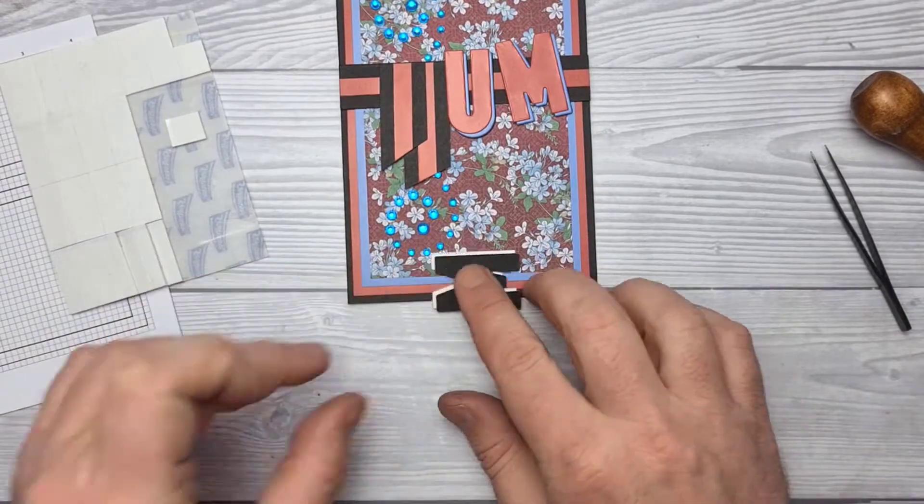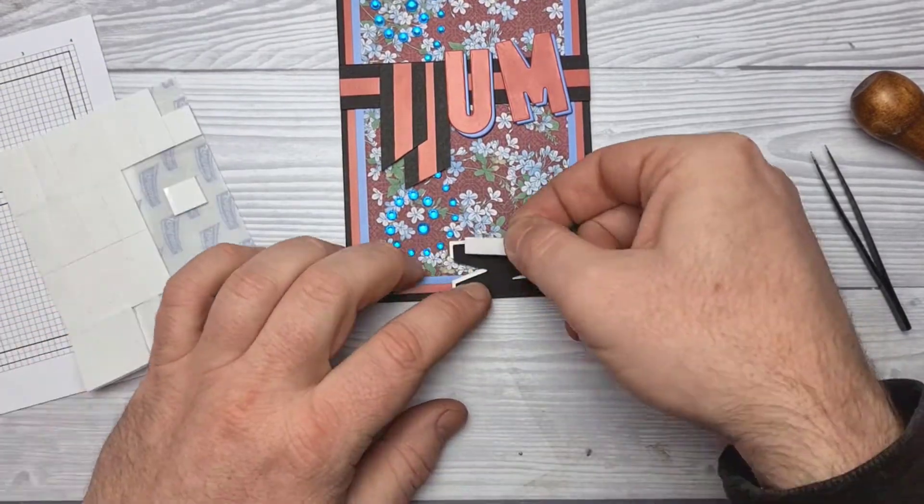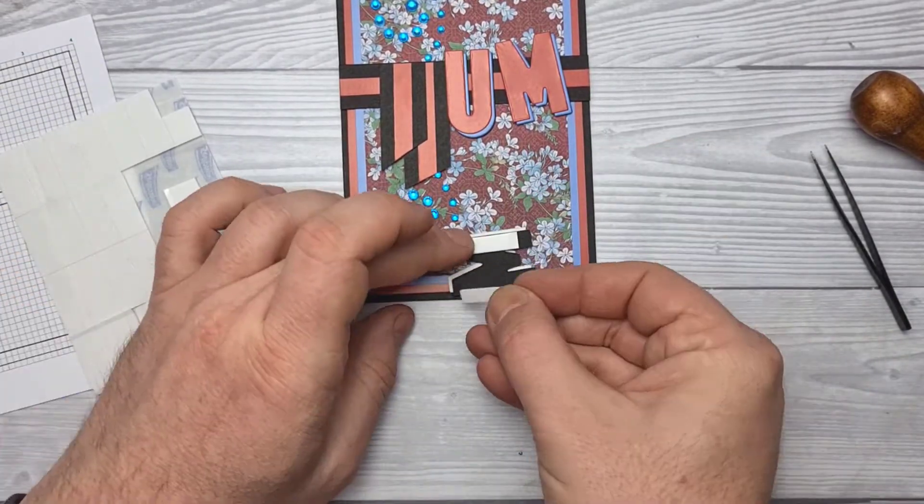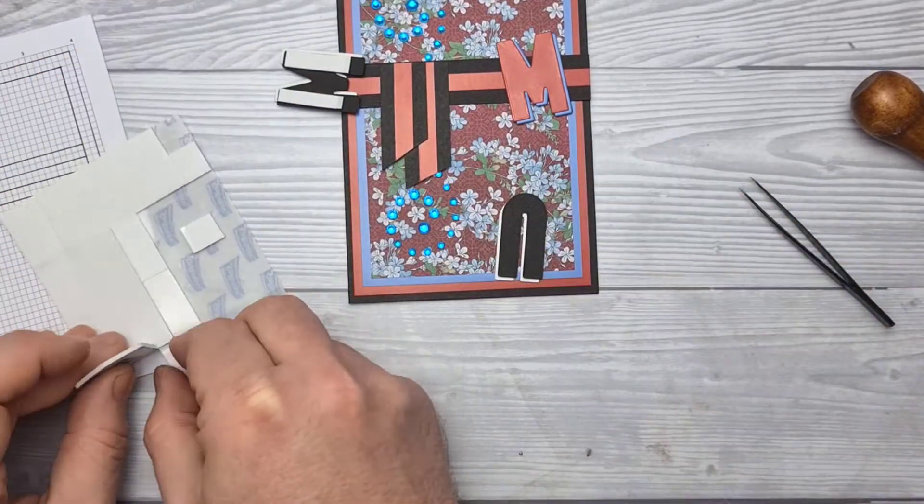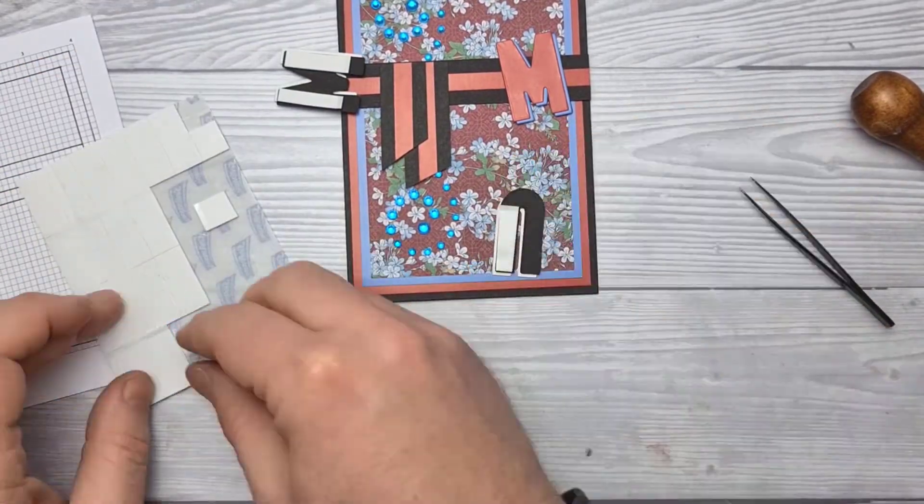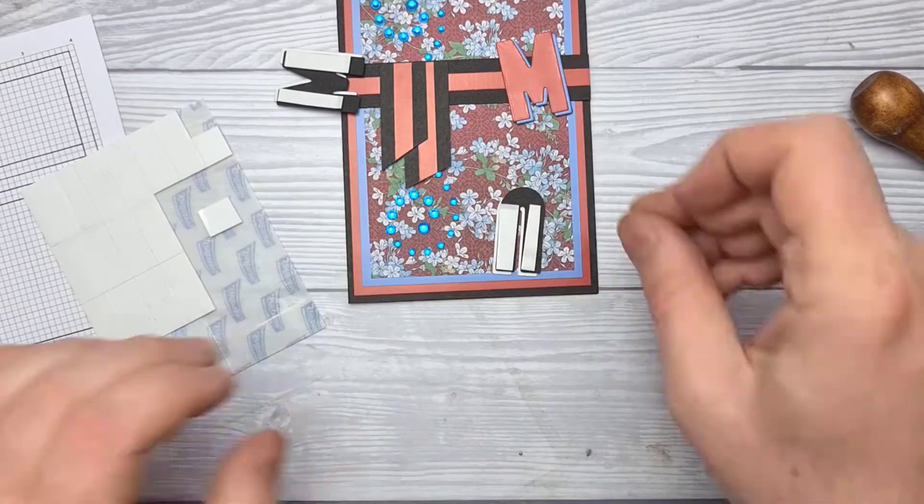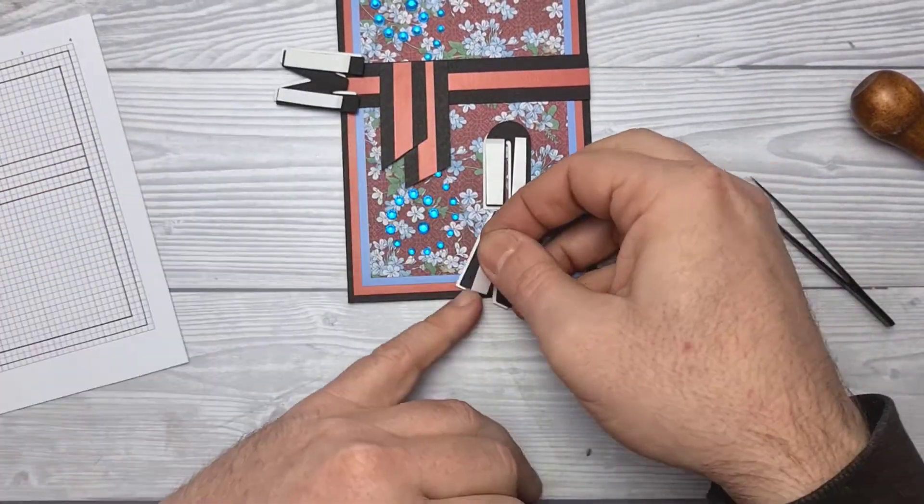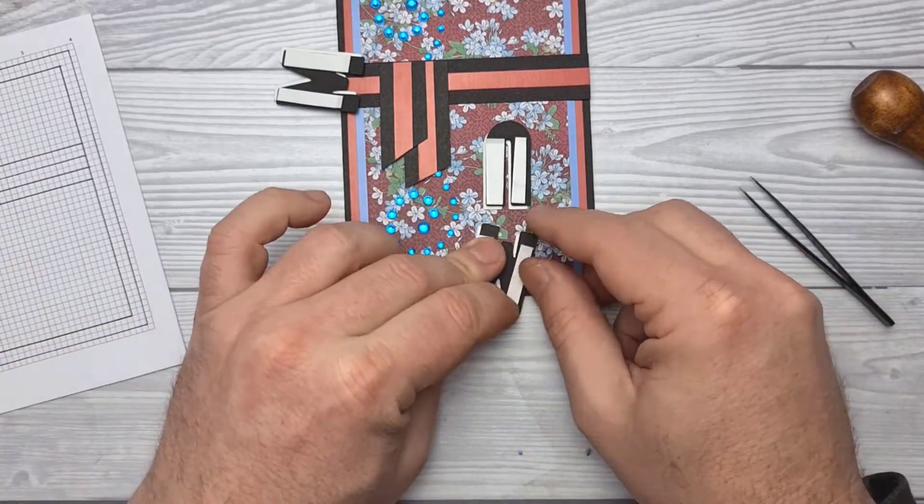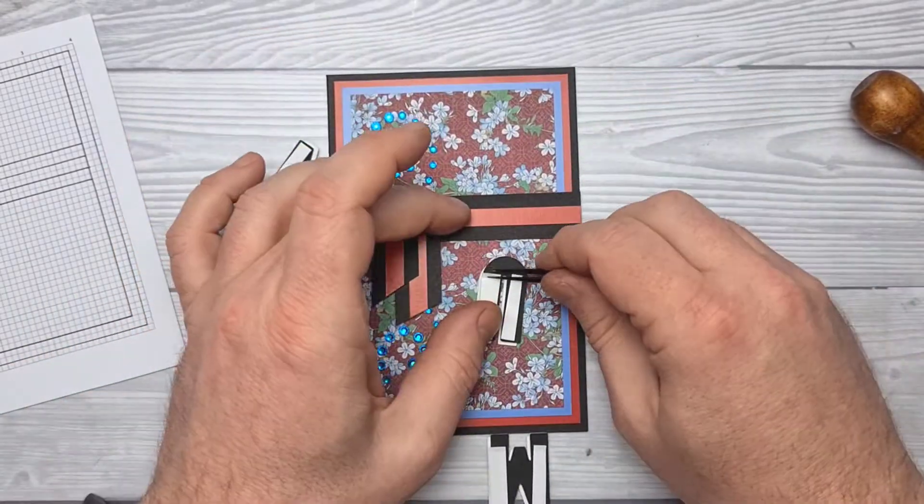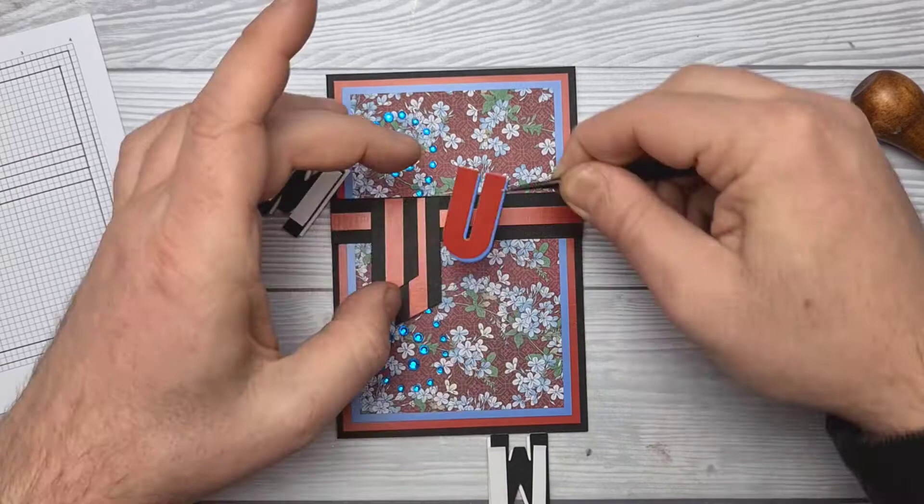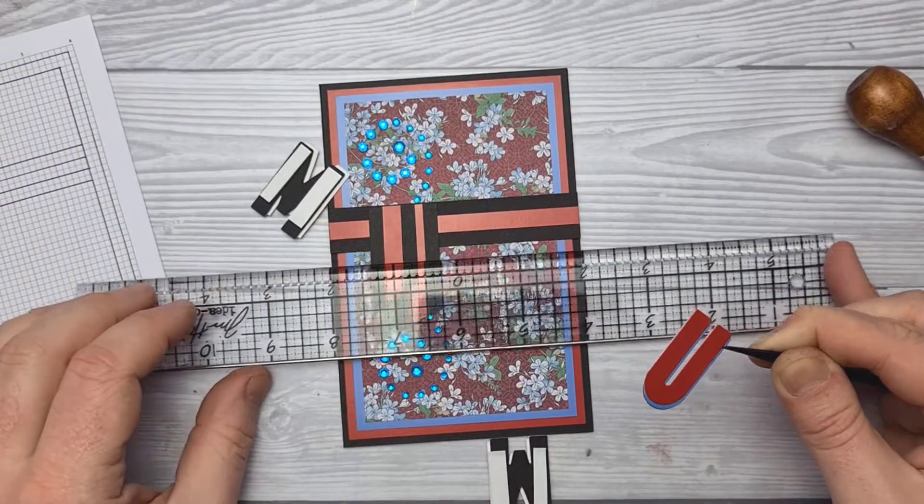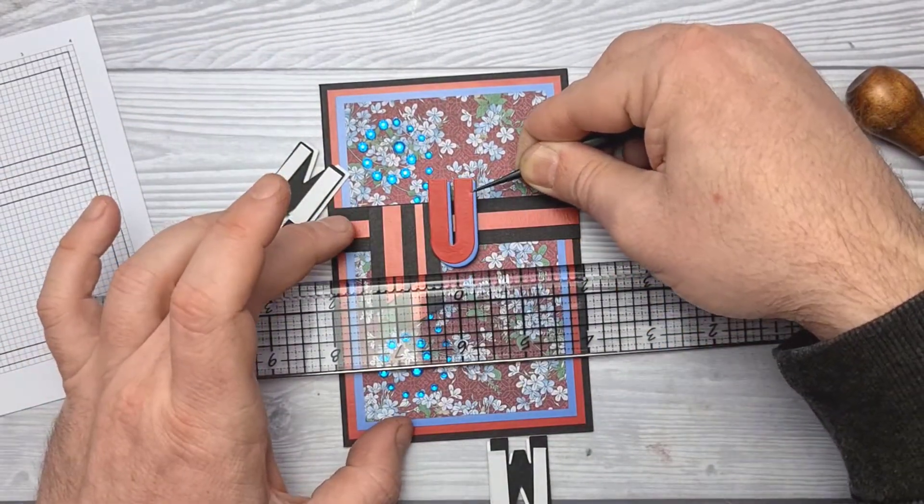Snipping up the foam pads into slimmer strips so that I can apply them to the back of the letters. These letters by the way are by Julie Hickey Designs and you can find them on the internet. And I know they're available in America, USA and England. So wherever you are hopefully you should be able to find them. If not search out Julie Hickey Designs on the internet and ask her.